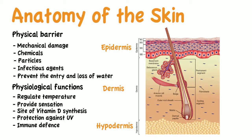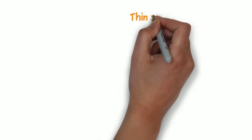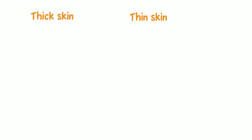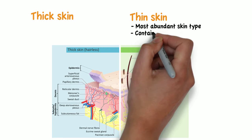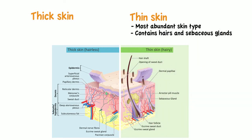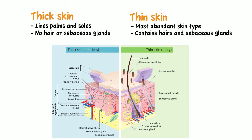Before going into detail about each layer, let's talk about thick and thin skin. Thin skin is the most abundant skin type — it lines most of the body and contains hairs and glands. Thick skin, on the other hand, lines the palms of our hands and soles of our feet and has no hair or sebaceous glands. These types of skin present some differences in their anatomical structures, namely the epidermis and the dermis.